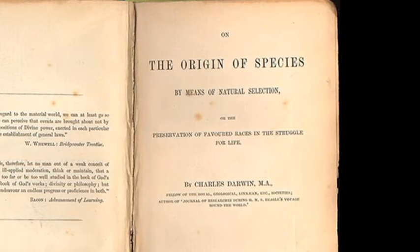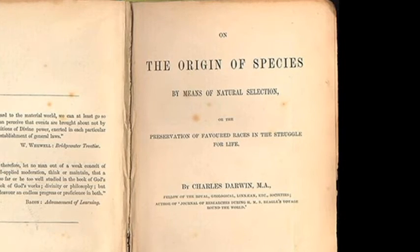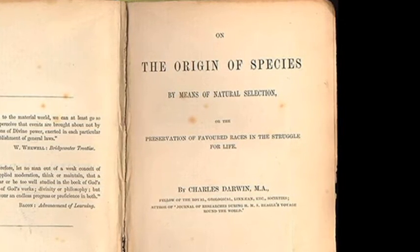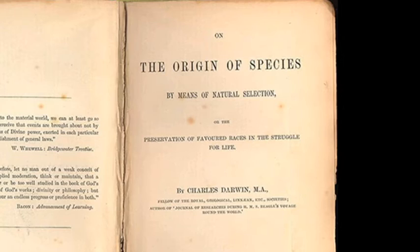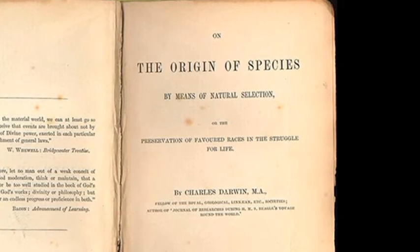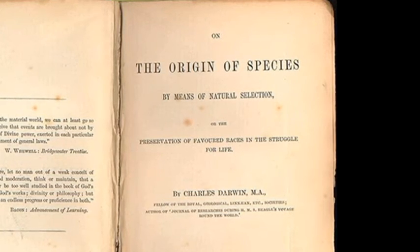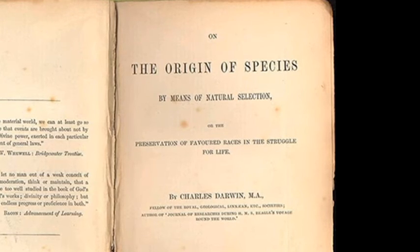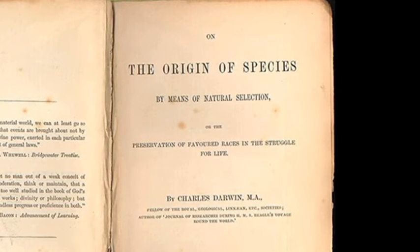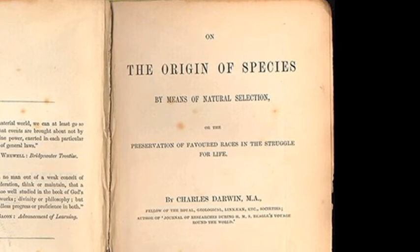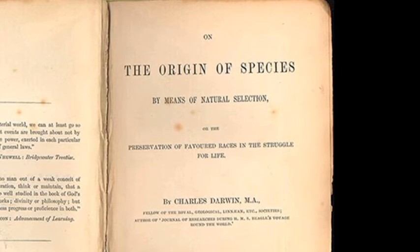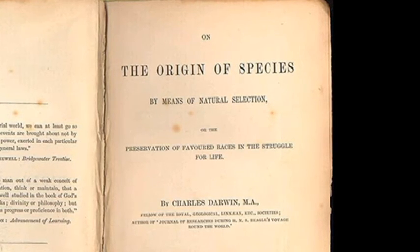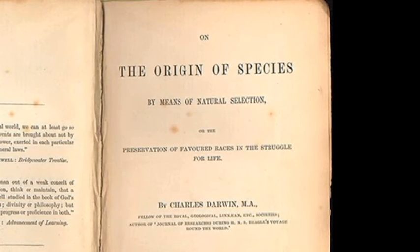These ideas began to be challenged from the middle of the 18th century, with Darwin's own grandfather, Erasmus Darwin, proposing a hypothesis on the transmutation of species in the 1790s, in which slight genetic mutations are passed on to subsequent generations.